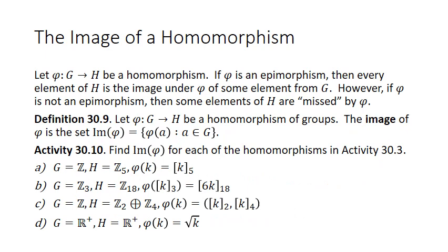Now let's talk about the image of a homomorphism, and we'll see that the kernel and image are related in quite an interesting way. Let phi from G to H be a homomorphism. If phi is an epimorphism — surjective — then every element of H is the image under phi of some element from G. However, if phi is not an epimorphism, some elements of H are missed. Definition 30.9: let phi from G to H be a homomorphism of groups. The image of phi is simply all the outputs we get from phi for every element in G — it's the image of the entire group under that map.